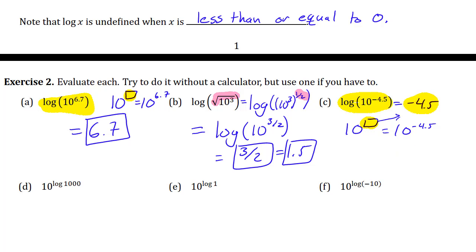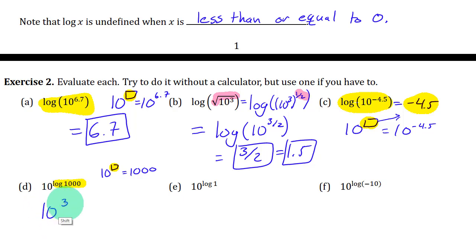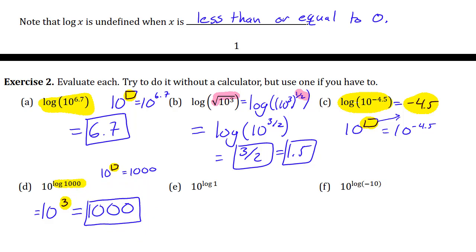Part d is a little different. Let's start with log of 1,000. Log of 1,000 is whatever exponent of 10 results in 1,000. So 10 to what power is 1,000? That would be 10 to the power 3. So I can rewrite this: 3 is the result of that logarithm. And then what is 10 to the power 3? That's 1,000. You can see how these kind of cancel each other out.